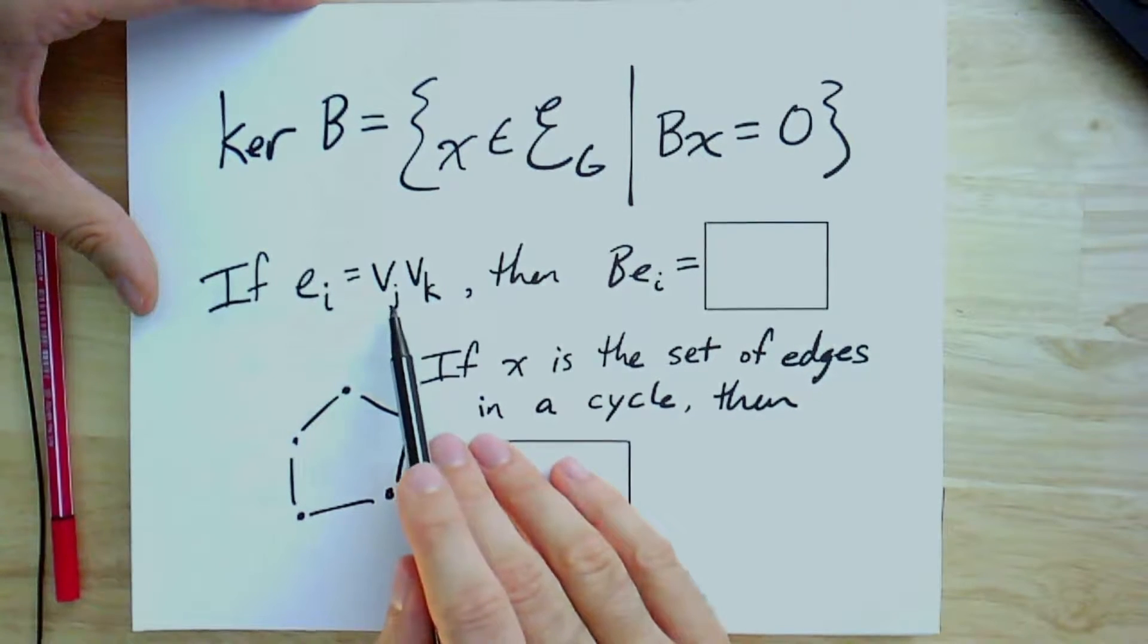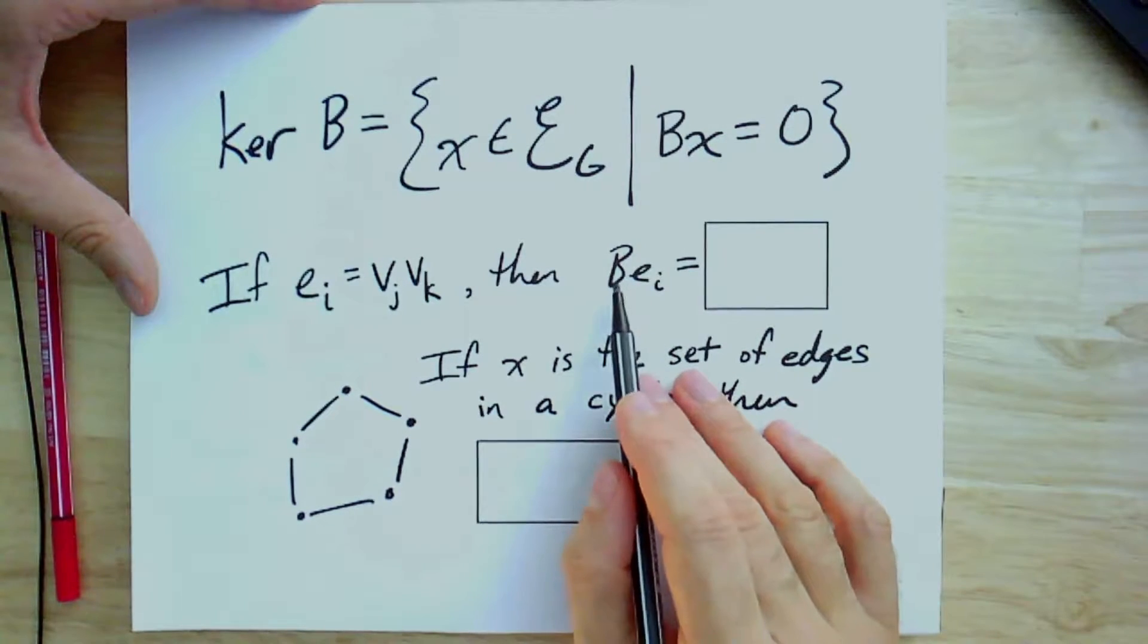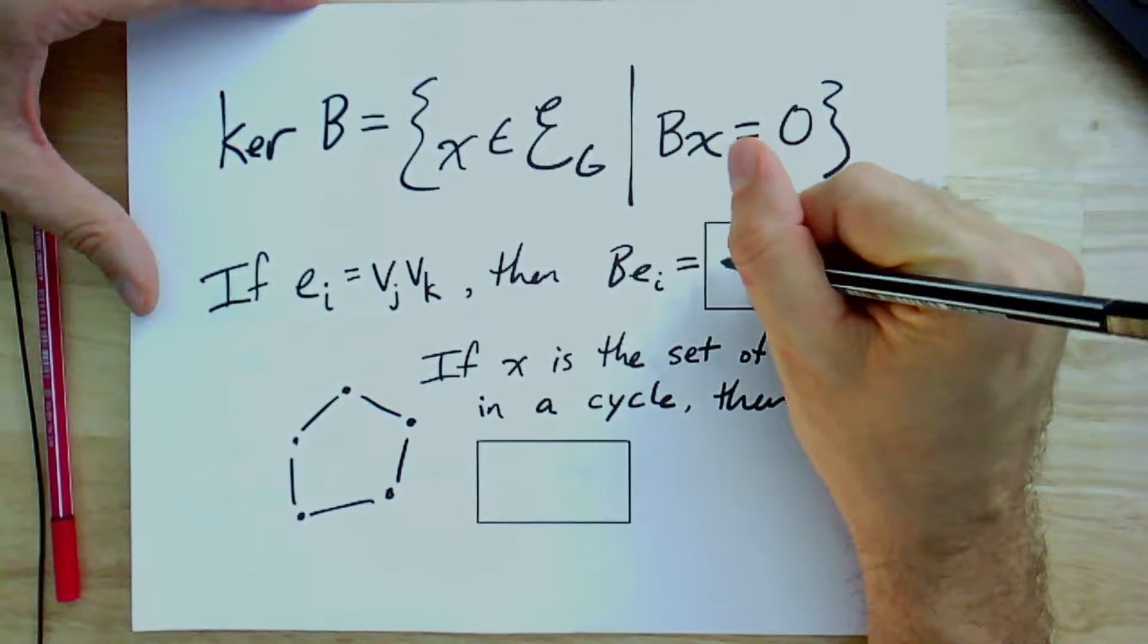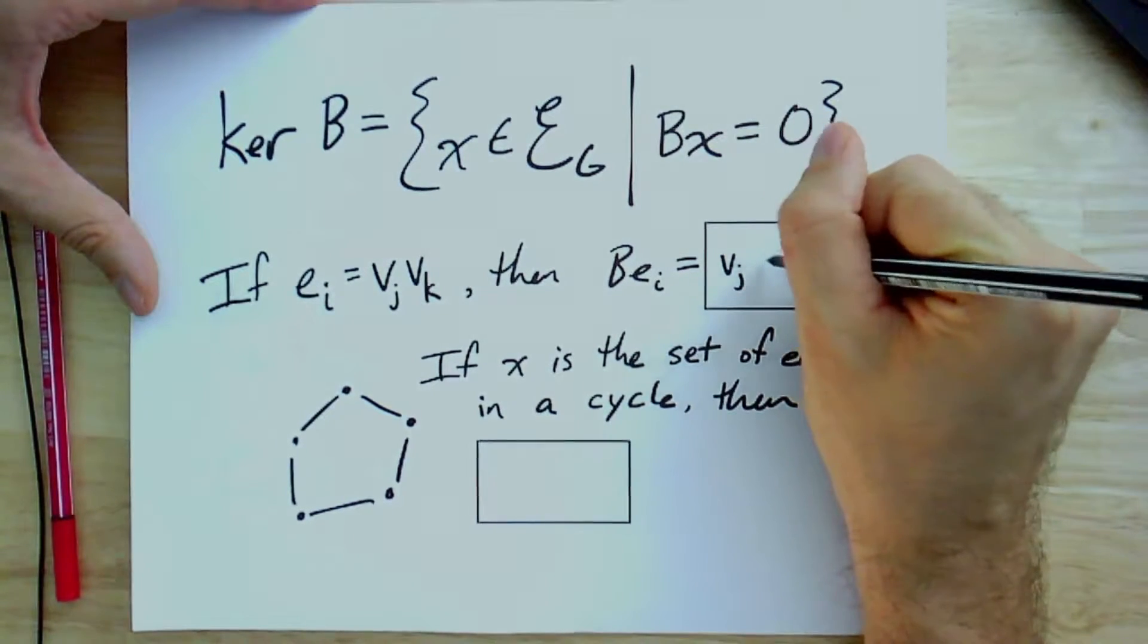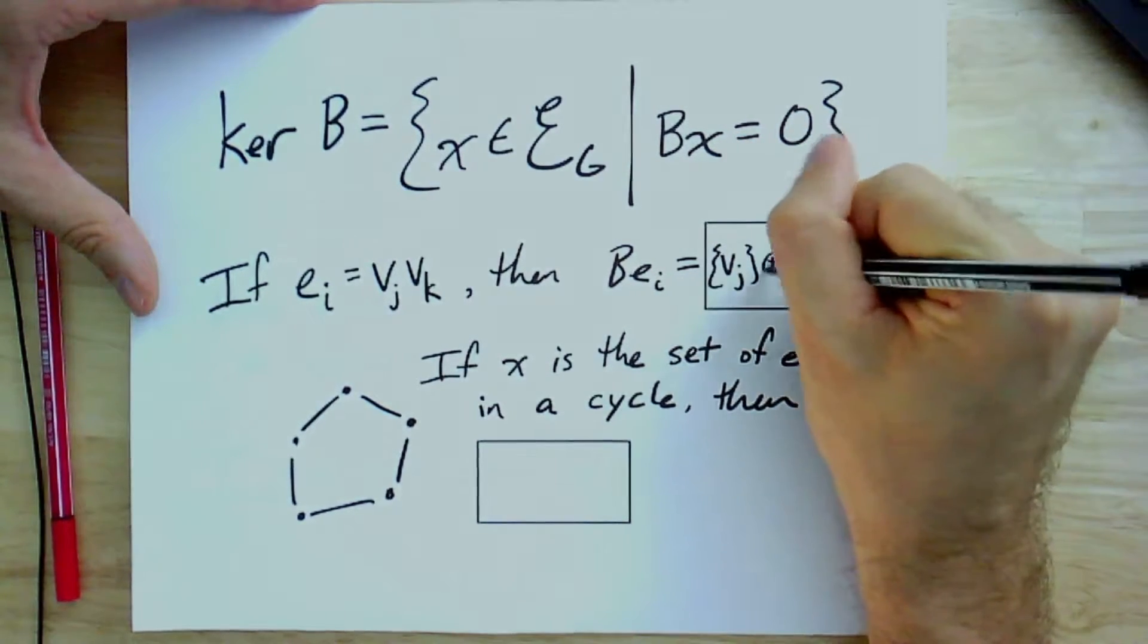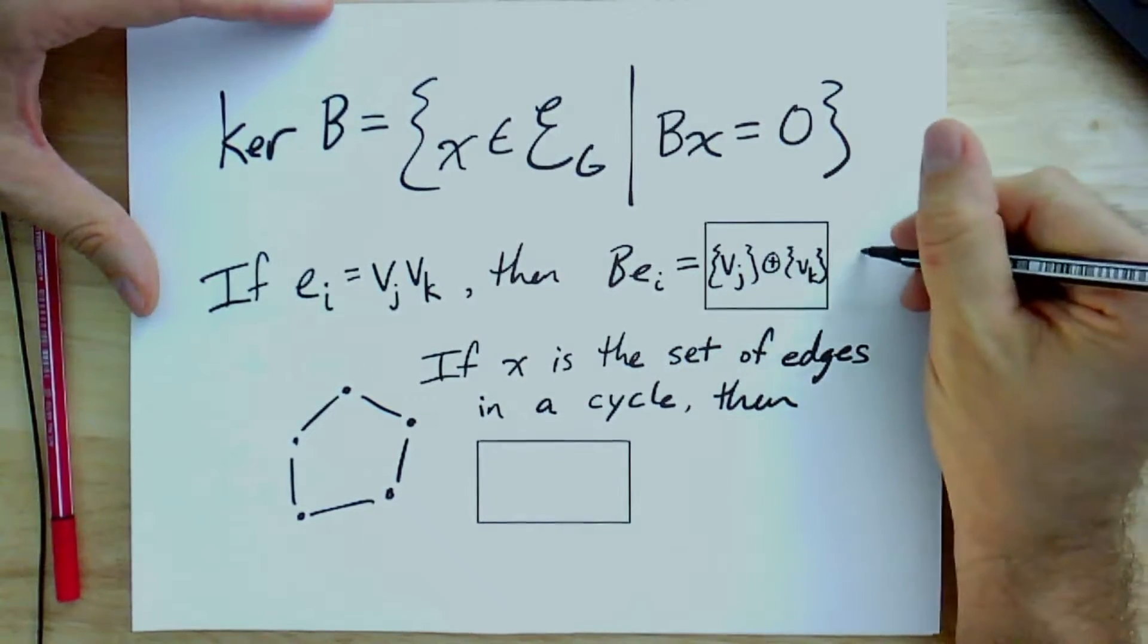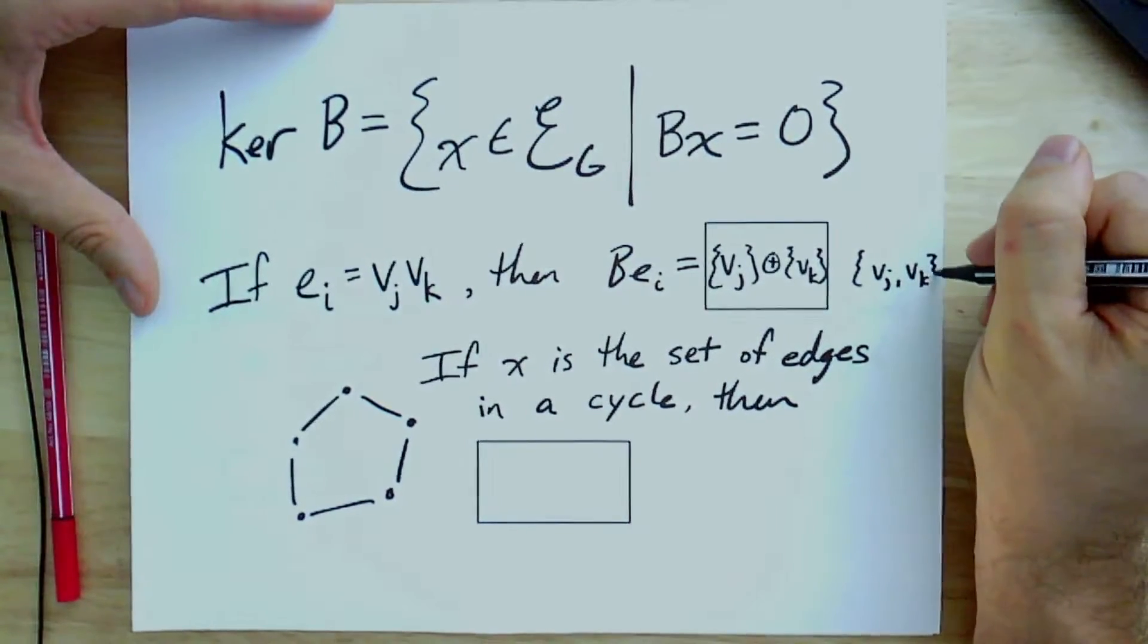If ei is a particular vertex vj, vk, then the incidence matrix times ei is just going to give you something like vj plus vk. Or I could have just written it as vj, vk, all right?